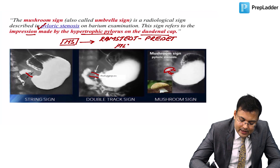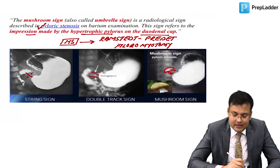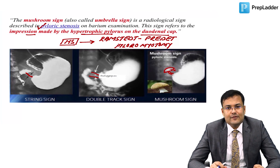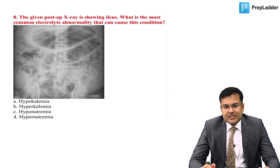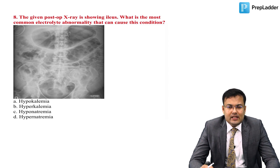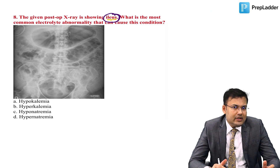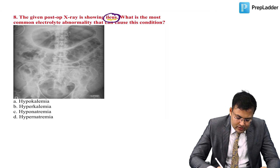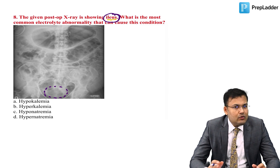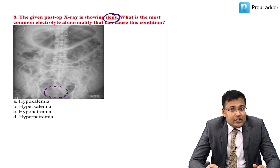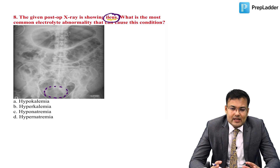The surgical treatment of choice for pyloric stenosis is Ramstedt-Fredet pyloromyotomy. Next question: post-operative X-ray showing ileus. Multiple dilated bowel loops are present with gas in the rectum — partial or adynamic obstruction. This is post-operative ileus.